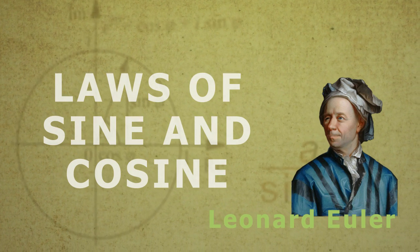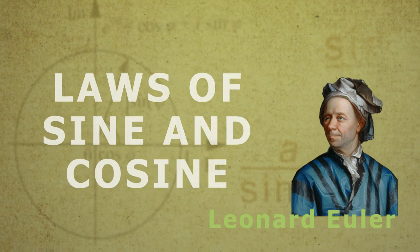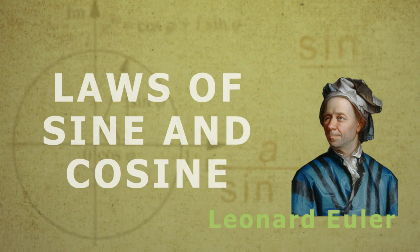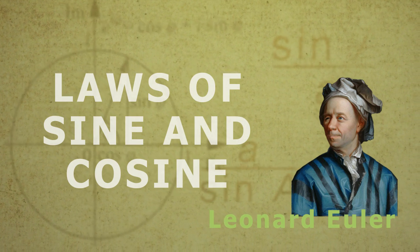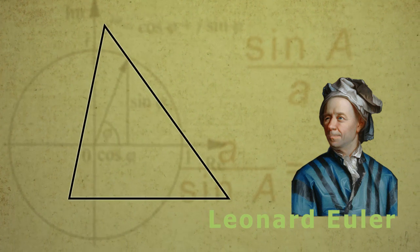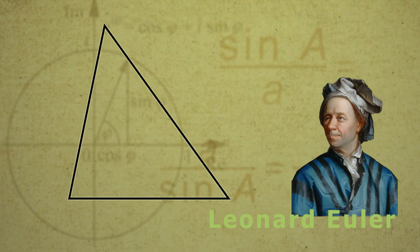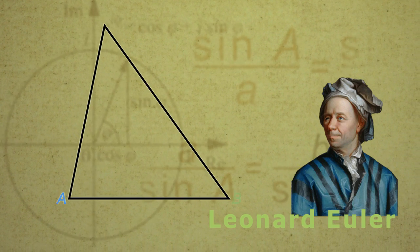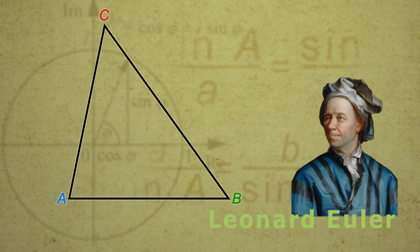Before proceeding with laws of sine and cosine, it is vital to review naming conventions of a triangle. Here is a quick look. Since the time of famous Swiss mathematician Leonard Euler, it has been a tradition to use uppercase letters to mark the angles.